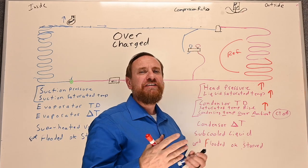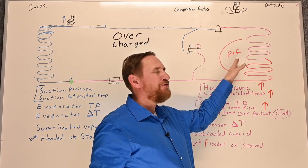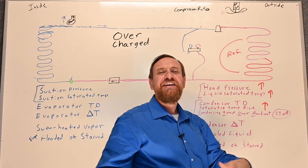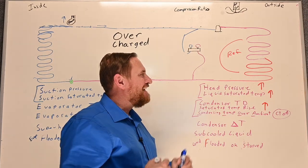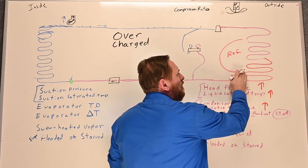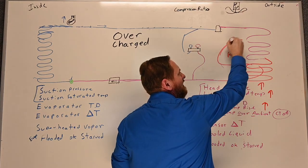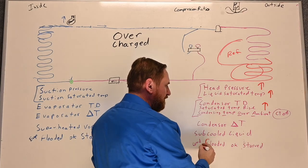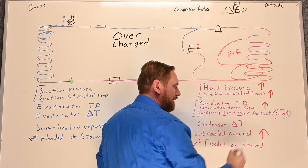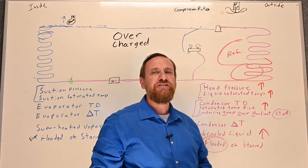Let's say we're designed for a 10 to 15 degree temperature difference. As we have more and more molecules, the pressure goes up, the saturated temperature goes up — now maybe we have a 30 degree temperature difference between the refrigerant and the air. That's a big important factor. We also have more refrigerant in the condensing unit, so we end up with more sub-cooled liquid. That pushes our saturation down to a smaller area, so our sub-cooling starts to go up, giving us a flooded condensing unit.